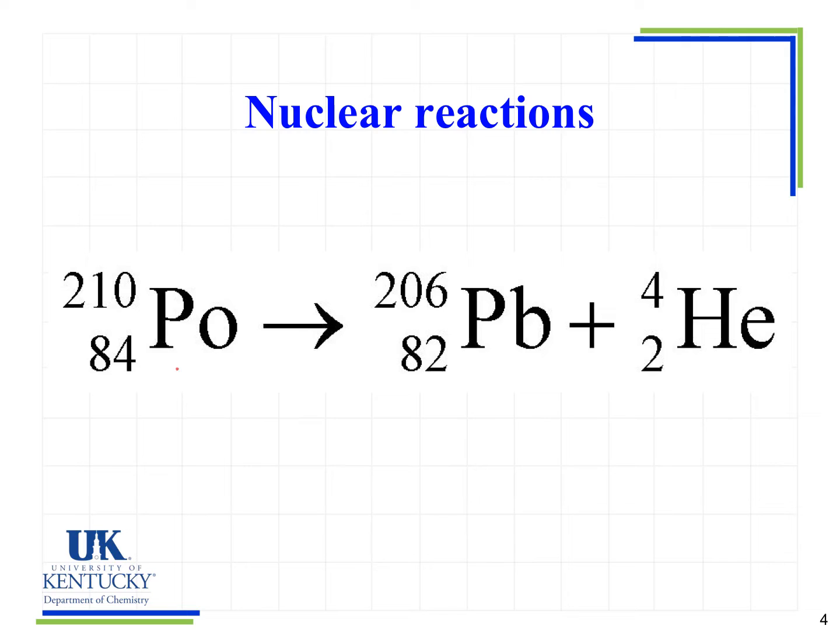On the product side we see lead which has the symbol Pb, has an atomic number of 82 so that's our number of protons. And then we see helium as our other product and remember that's also known as an alpha particle.